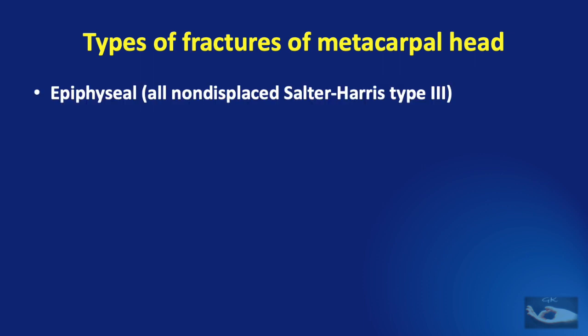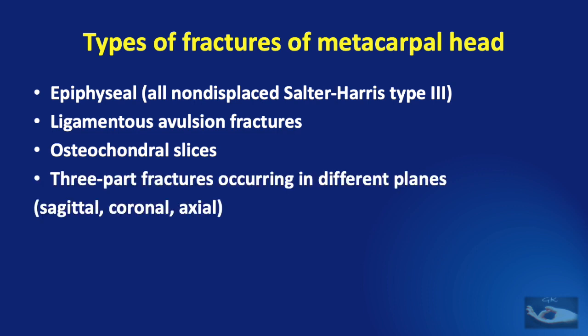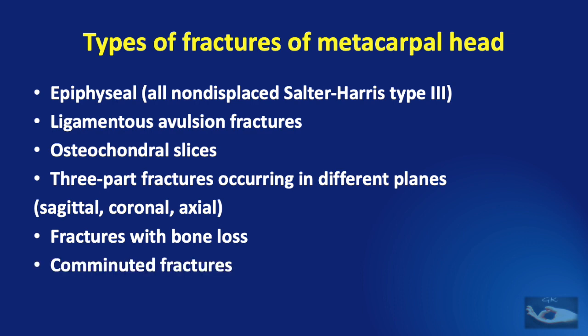The types of metacarpal head fractures include: epiphyseal fractures, mostly non-displaced Salter-Harris type 3; ligamentous avulsion fractures; osteochondral slices; three-part fractures occurring in different planes — sagittal, coronal, or axial; fractures with segmental bone loss; and finally, comminuted fractures.